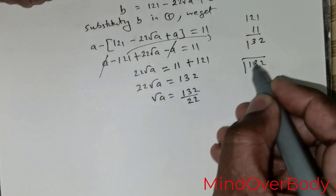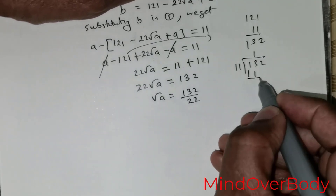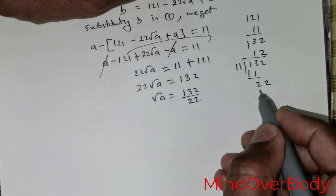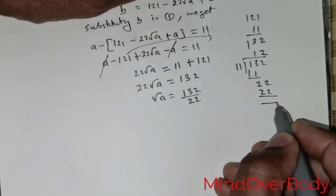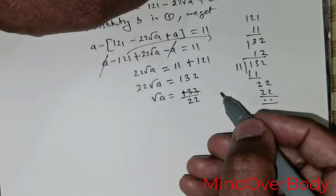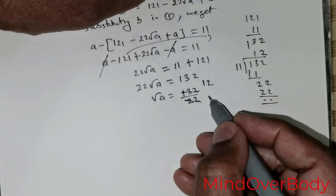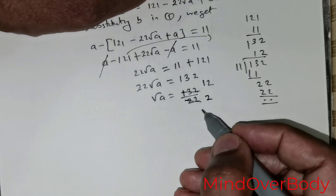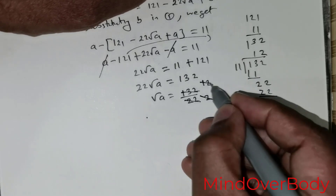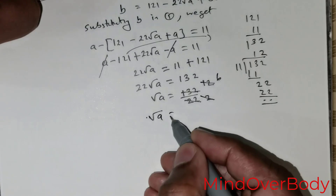Root of A is equal to 132 divided by 22. Now, 11 divides into 132: 11 goes once with 11, bring the 2 down to get 22, and 11 divides 22 twice — so 132 divided by 11 is 12. Then 12 divided by 2 gives 6. So I have got square root of A is equal to 6.